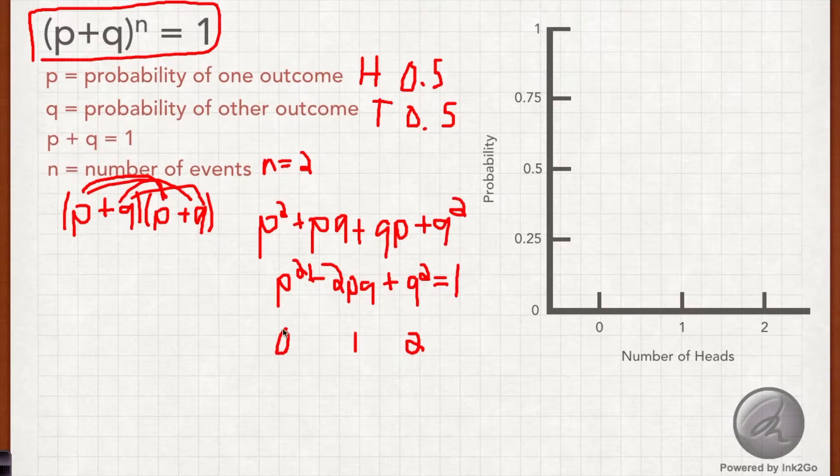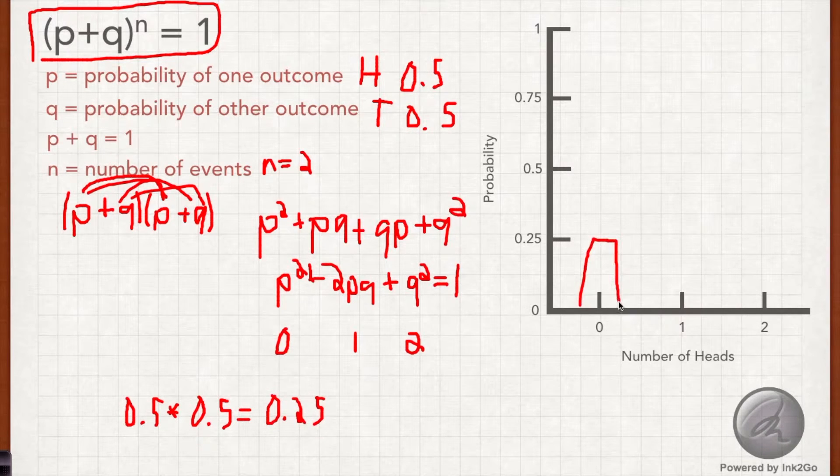To find the likelihood of 0 heads, we square 0.5. We know that 0.5 times 0.5 is 0.25. The second term, P times Q, again 0.5 times 0.5 is 0.25. But then we multiply that by 2, and that gives us 0.5. And the third term, Q squared, again 0.5 squared, is 0.25.